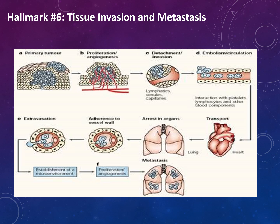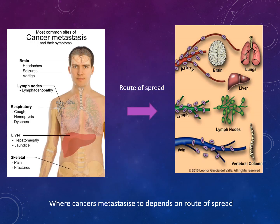The ability to metastasise allows cancer cells to find new areas of the body where space and nutrients are not limiting. The most common sites of cancer metastasis include the brain, lymph nodes, the respiratory system, the liver, and skeletal system. Symptoms include headache, seizures, lymphadenopathy, cough, haemoptysis, jaundice, and fractures.